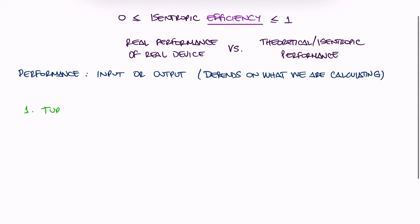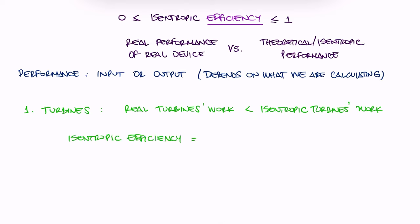In the case of a turbine, a real turbine produces less work than an isentropic one, and therefore the isentropic efficiency is the work produced by a real turbine over the work produced by its isentropic counterpart.